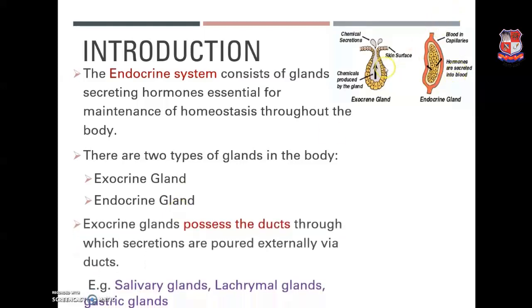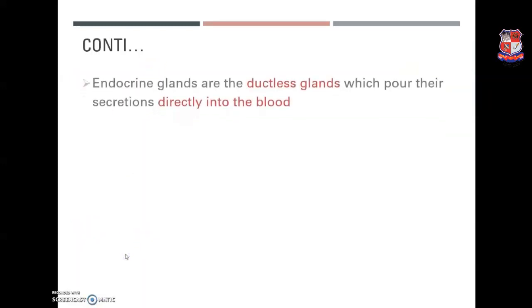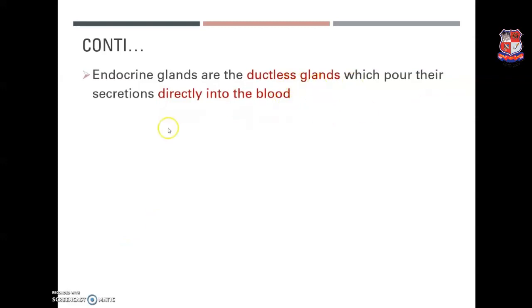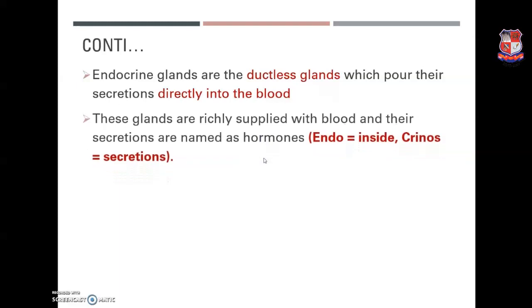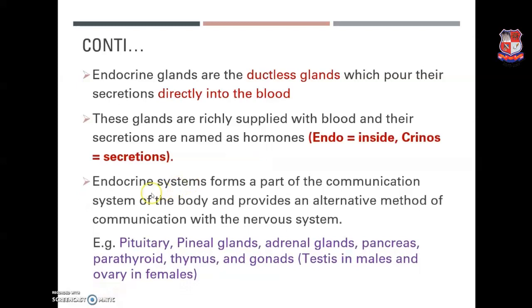Exocrine glands possess ducts through which secretions are poured externally. Examples include the salivary glands, parotid glands, and gastric glands. Endocrine glands are ductless glands and pour their secretions directly into the bloodstream. They are richly supplied with blood and their secretions are named hormones. The endocrine system forms part of the communication system and provides an alternative method of communicating with the nervous system.